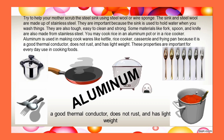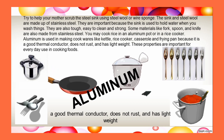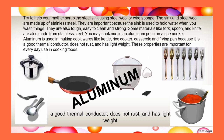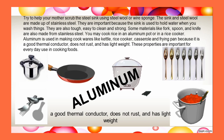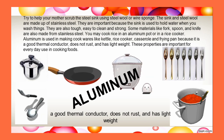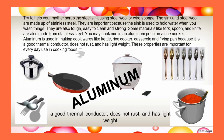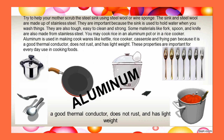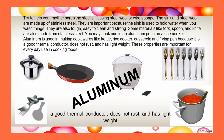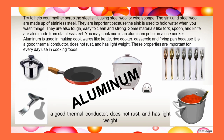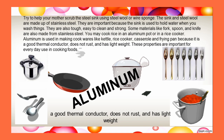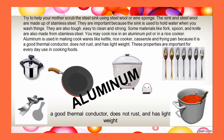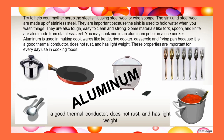You may cook rice in an aluminum pot or in a rice cooker. Aluminum is used in making cookware like kettles, rice cookers, casseroles, and frying pans because it is a good thermal conductor. It does not rust and has a light weight. These properties are important for everyday use in cooking foods.